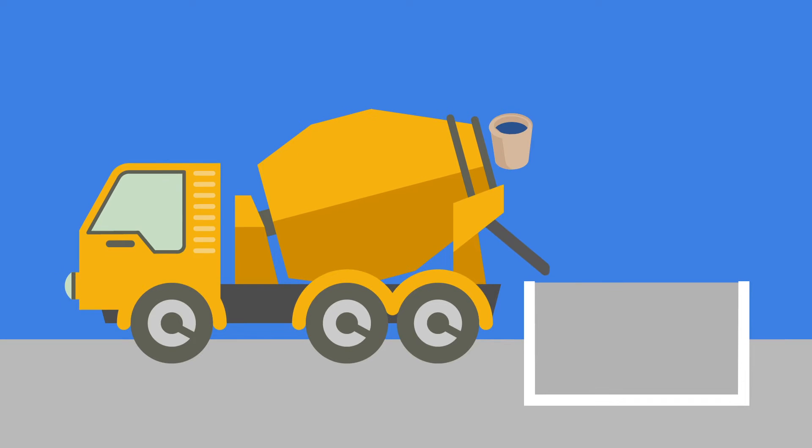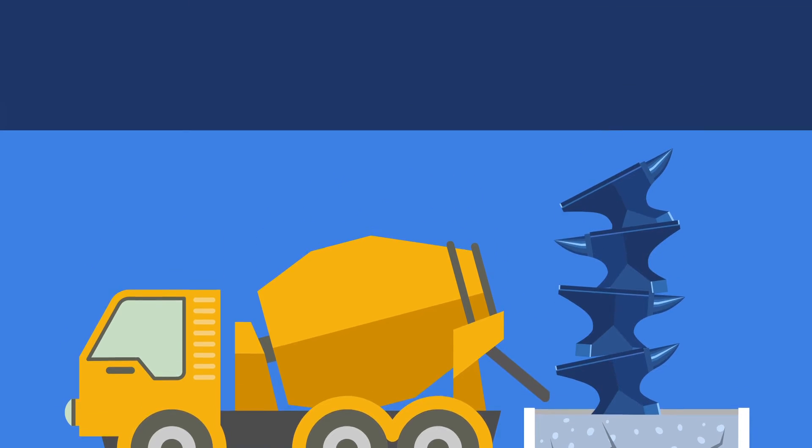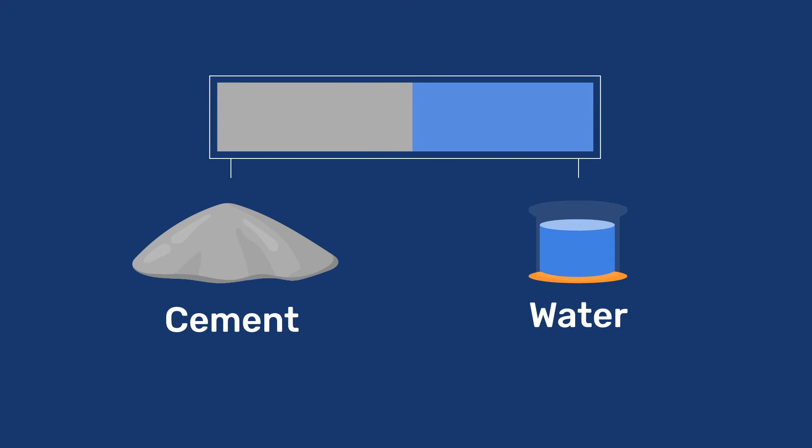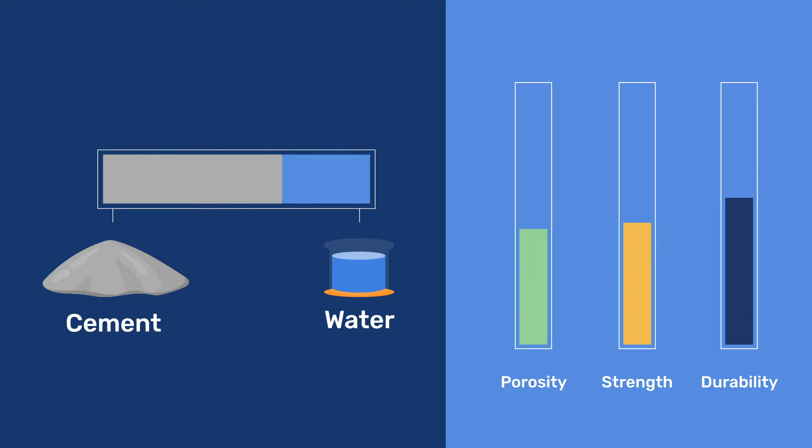In practice, more water than needed for the chemical reaction has to be used for the material to be plastic or flowable. That excess water leads to additional porosity, which negatively impacts the strength and durability of the hardened material. Conversely, decreasing the water content in concrete will decrease porosity, increase strength, and durability. This should be taken into account when deciding what type of concrete to use depending on load-bearing requirements and the planned service life.